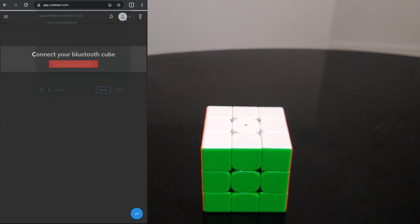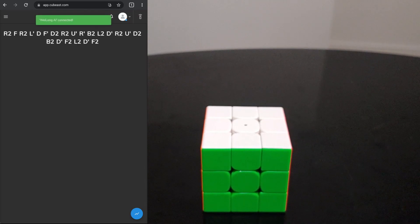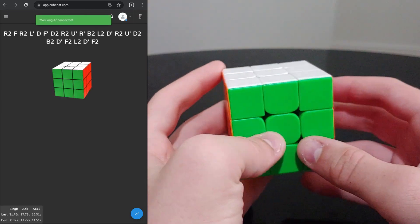So you can use the connect button, and then tap on the cube pair. And Cubist does not support the gyroscope, but you can still do solves.